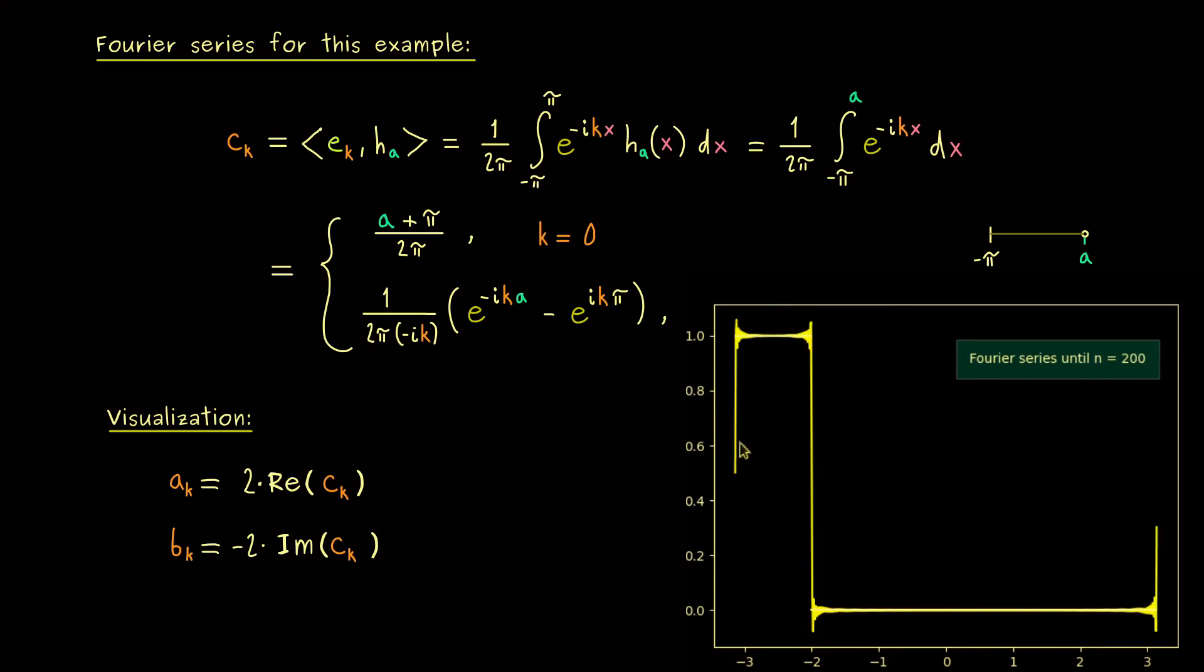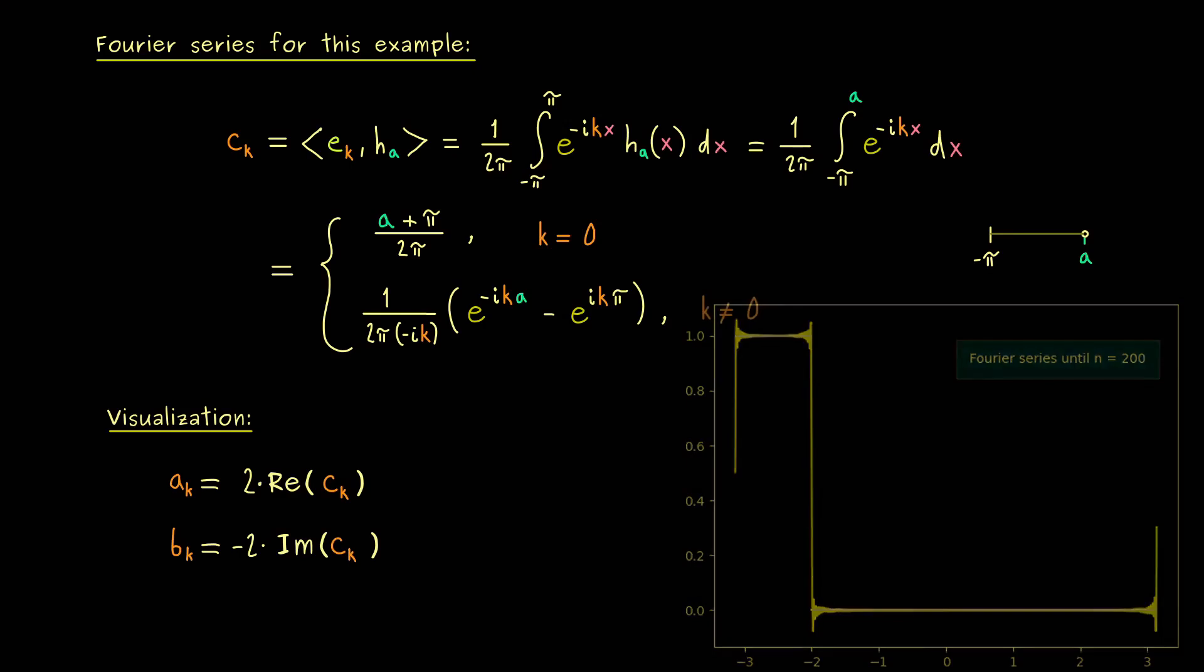And now to close this visualization, let's jump to 200. There we have a lot of oscillations, so we barely see our original function anymore. So even in the pointwise sense, we are very close to the function, at least in this area here. So at least our visual conclusion here is, that the Fourier series converges in the L2 sense, as we expected.